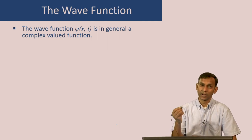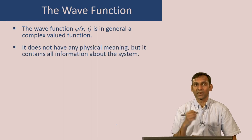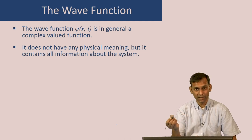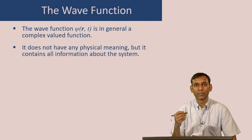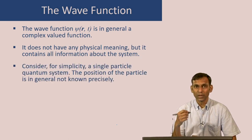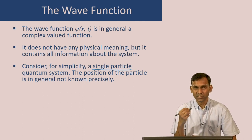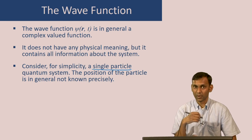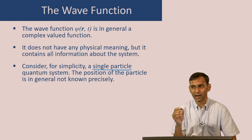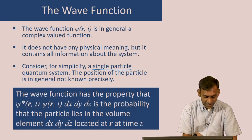The wave function itself does not have any direct physical meaning — it is a function of position and time that does not directly correspond to anything observable. However, it contains all information about the system. To understand what information it gives us, consider a single particle. The position of a quantum particle is in general not known precisely, but the wave function tells us something about where the particle can be found. Specifically, if you take ψ* (the complex conjugate of the wave function), multiply it by ψ, and then multiply by a small volume element at position r, this quantity gives the probability that the particle lies in that volume element at time t.